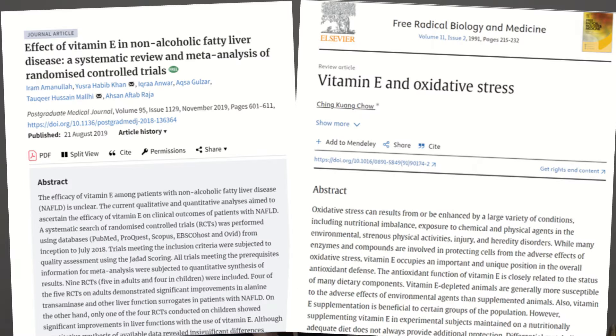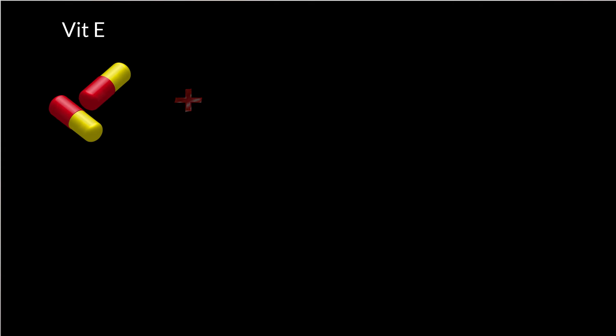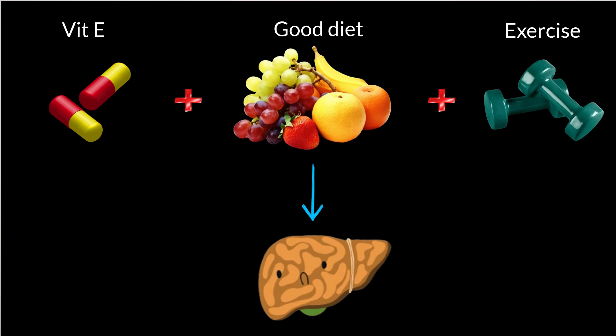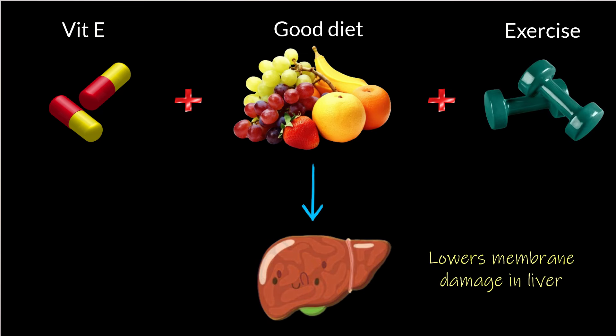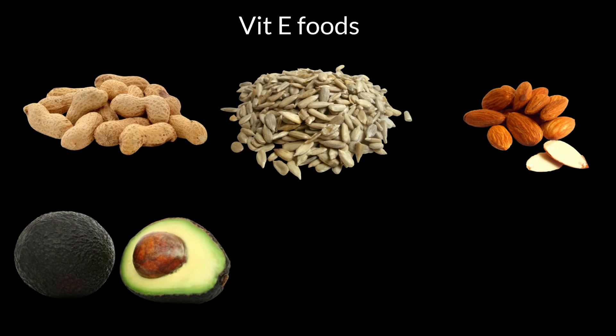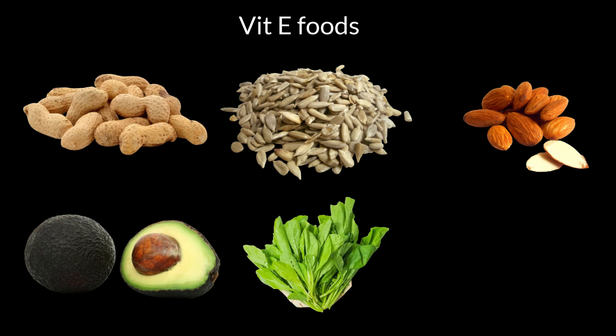Vitamin E, also known as tocopherols, is well known for preventing membrane damage caused by oxidative stress and excessive free radicals in the body. Vitamin E has been found to play a promising role, alongside a good diet and exercise, in managing the liver damage caused by fatty liver disease. You can take a vitamin E supplement or include vitamin E-rich foods in your diet, such as peanuts, sunflower seeds, almonds, avocado, spinach, pumpkin, and broccoli.